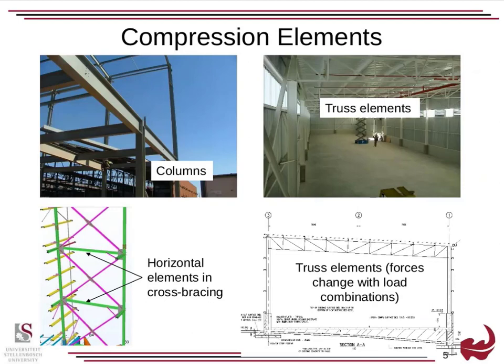Here are some examples of compression elements. You might have a column on a column. You can have horizontal members in cross bracing — if you've got a compressive force there, this will put that member into compression. You've got truss elements, and depending on the load case, a truss element may be in both compression and in tension. So in different load combinations, their forces will swap around.